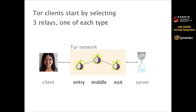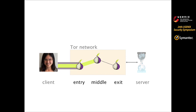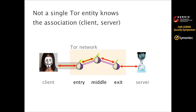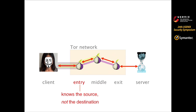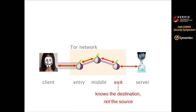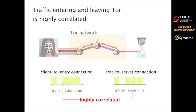The exit point finally sends the traffic to the destination server. To initiate a Tor communication, the Tor client first selects three relays, one of each type, then iteratively builds encrypted tunnels through them. Once the tunnels have been built, anonymous communication can happen by forwarding and routing traffic across the tunnels. The reason this scheme provides anonymity is that not a single Tor entity can map the client to the server. The entry relay knows the source but not the destination; the middle relay knows neither; while the exit relay knows the destination but not the source.